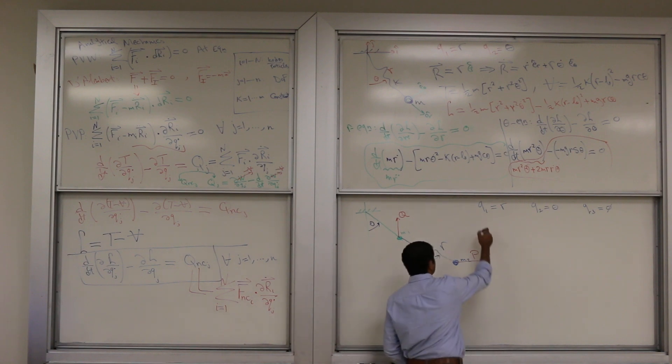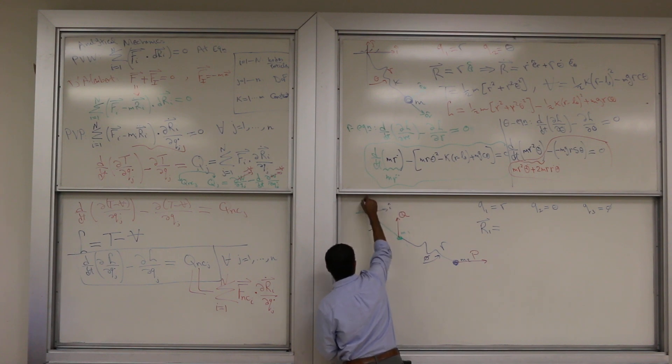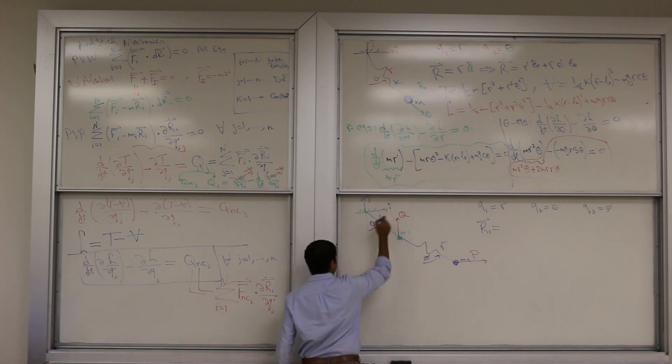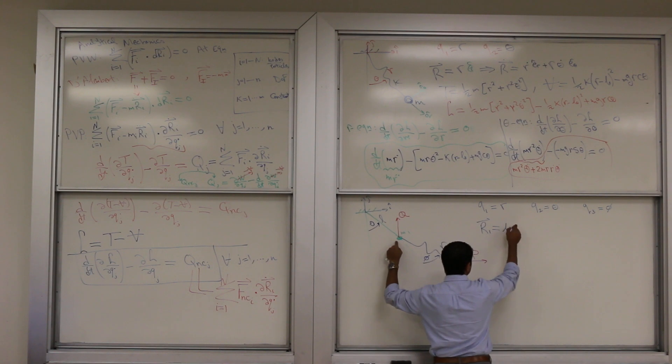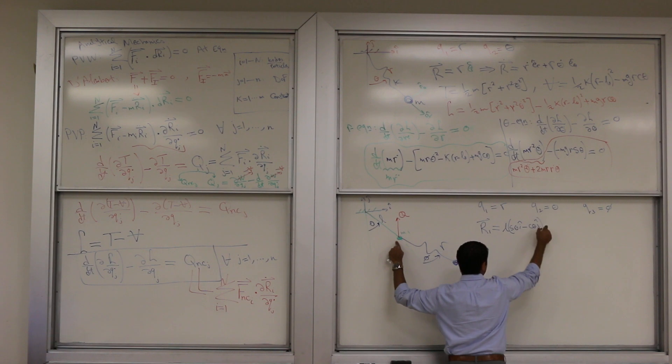So let's start. Your R1, please. Let's have maybe I and J inertial frame. This is length L. So position vector mass one, let's work I and J. This guy is L sine in the I direction, and negative cosine in the J direction.